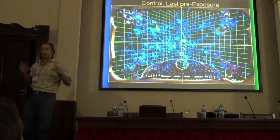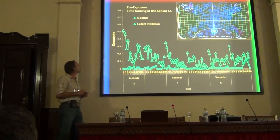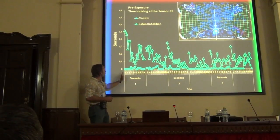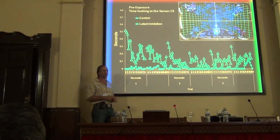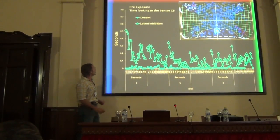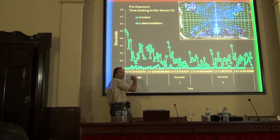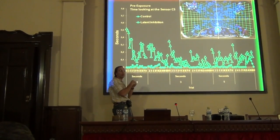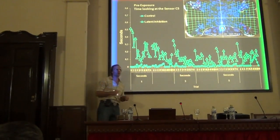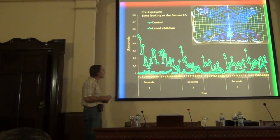The fun thing to do with all these data is to begin to quantify them and put them in graphs. What this graph is showing are the seconds looking at the sensor CS — seconds looking for each second of each trial during pre-exposure. The control group, down here at the bottom, is simply not looking at the CS. The pre-exposure group, in the first second, is looking at it quite a bit, and then that habituates within the trial. So we're seeing a nice analog here to a short-term and longer-term type of habituation graph to the orienting response.